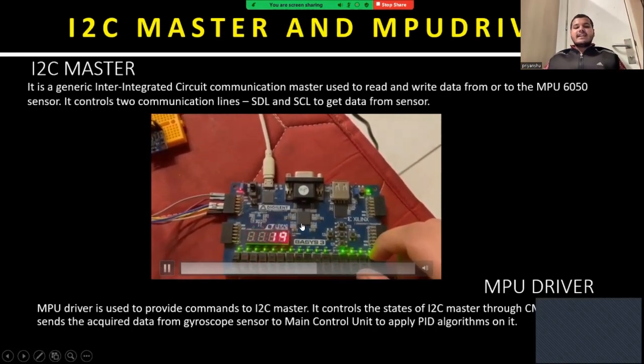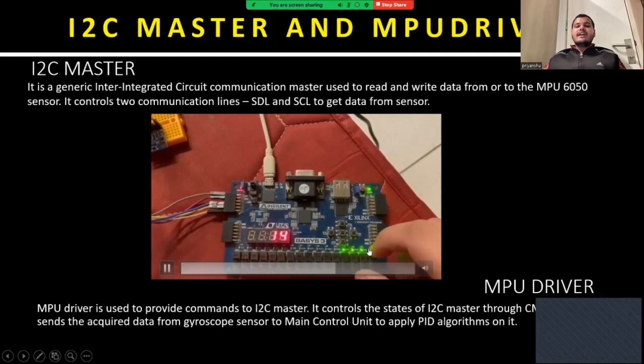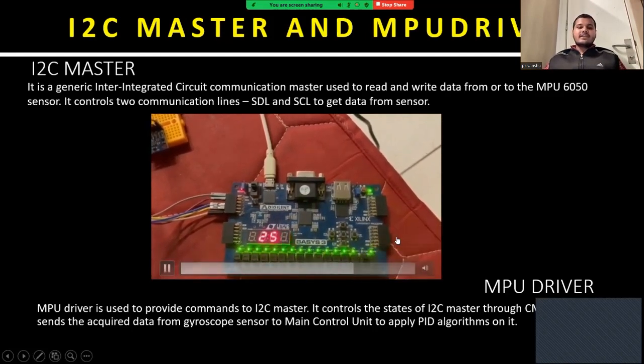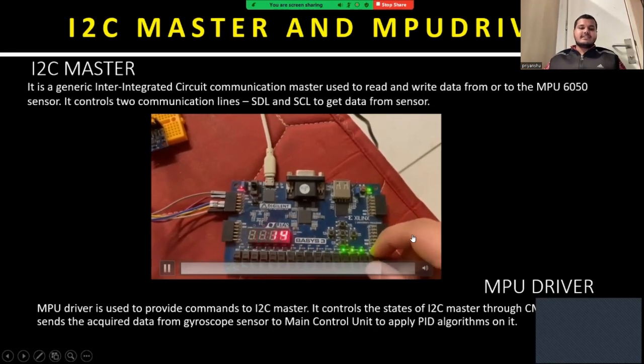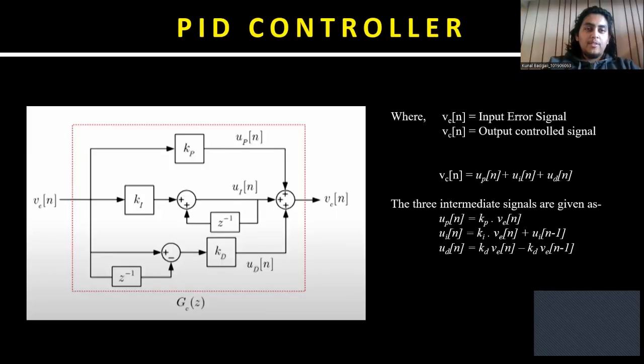We can control the X, Y, and Z axes using two pins on the bottom right corner, where 00 corresponds to the X axis, 01 corresponds to the Y axis, and 10 corresponds to the Z axis.